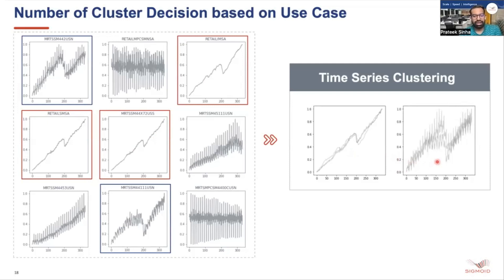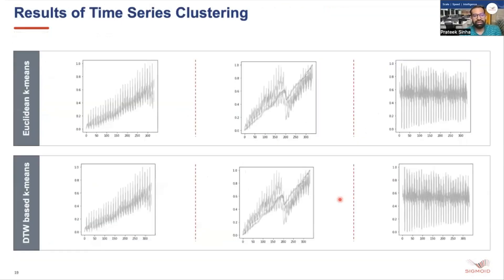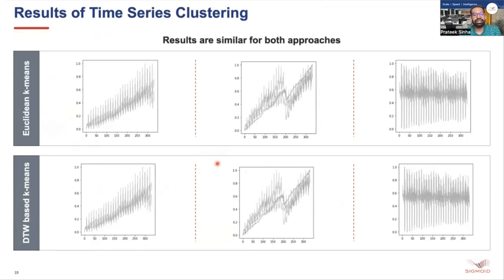Keeping that in mind, I've generated two results: one for three clusters and one for four clusters. Looking at the three-cluster results, we can see a Euclidean-based result and a DTW-based result, and the results are similar for both approaches in this case.